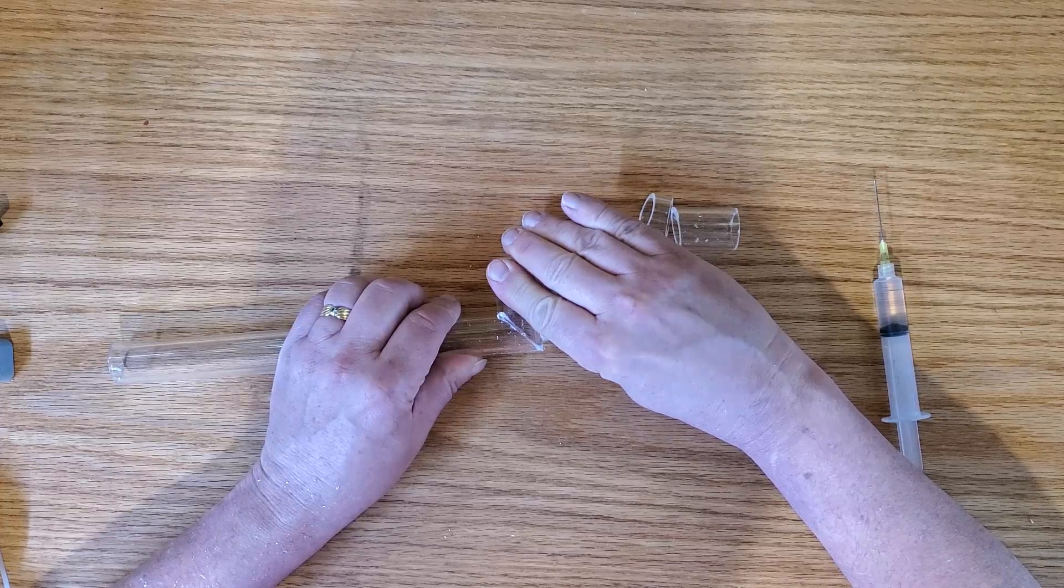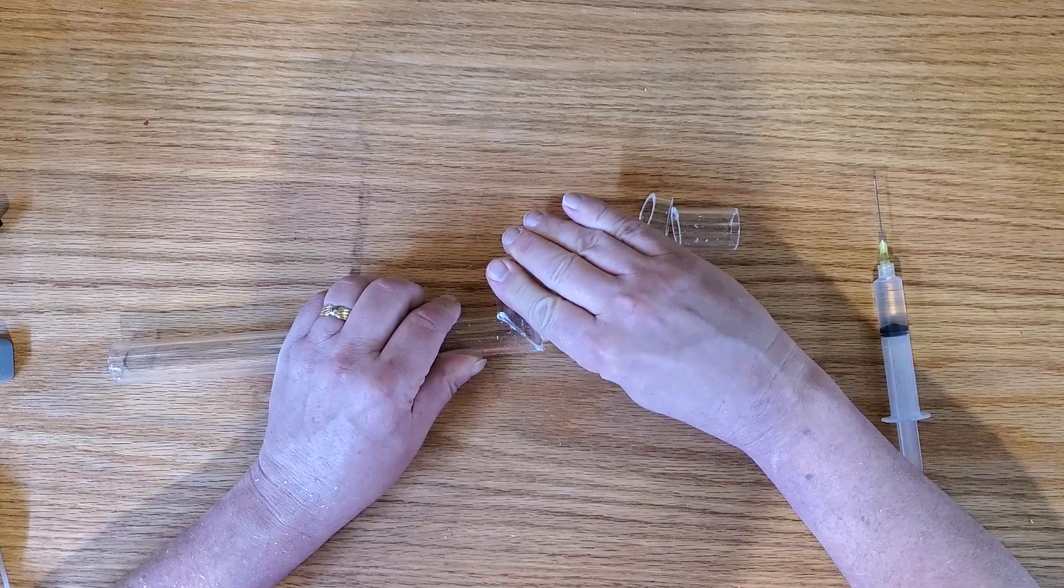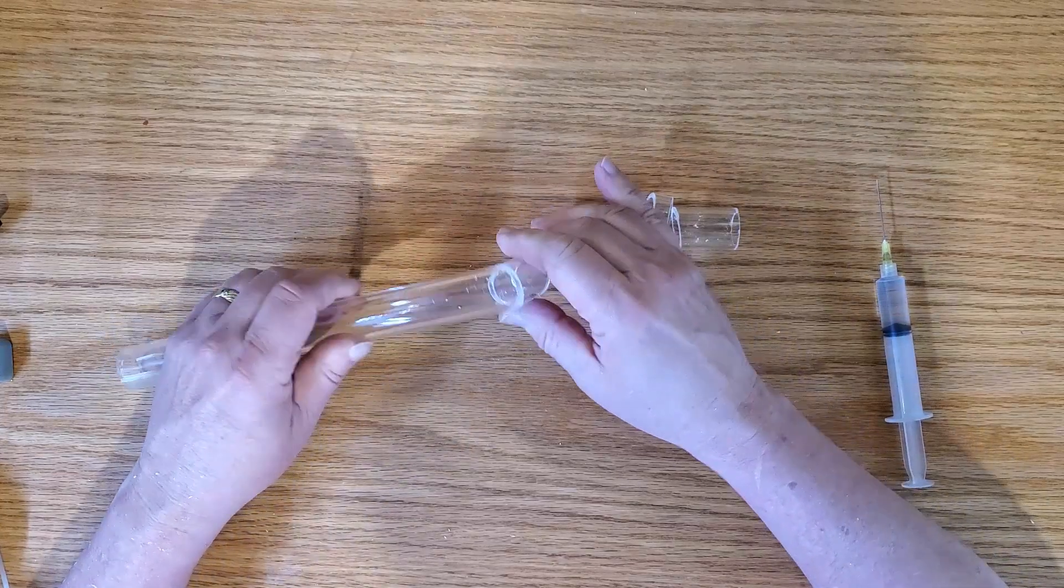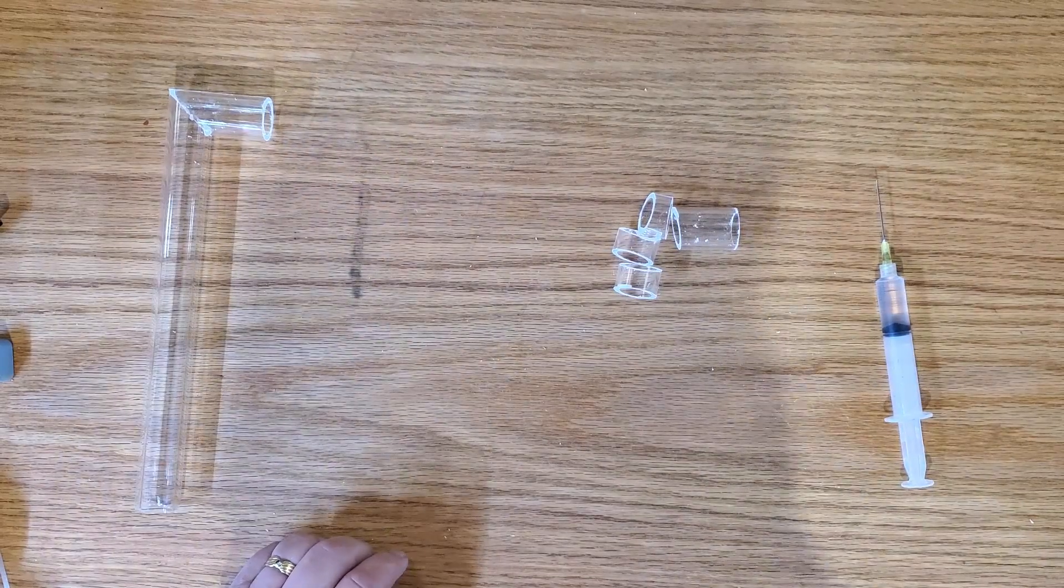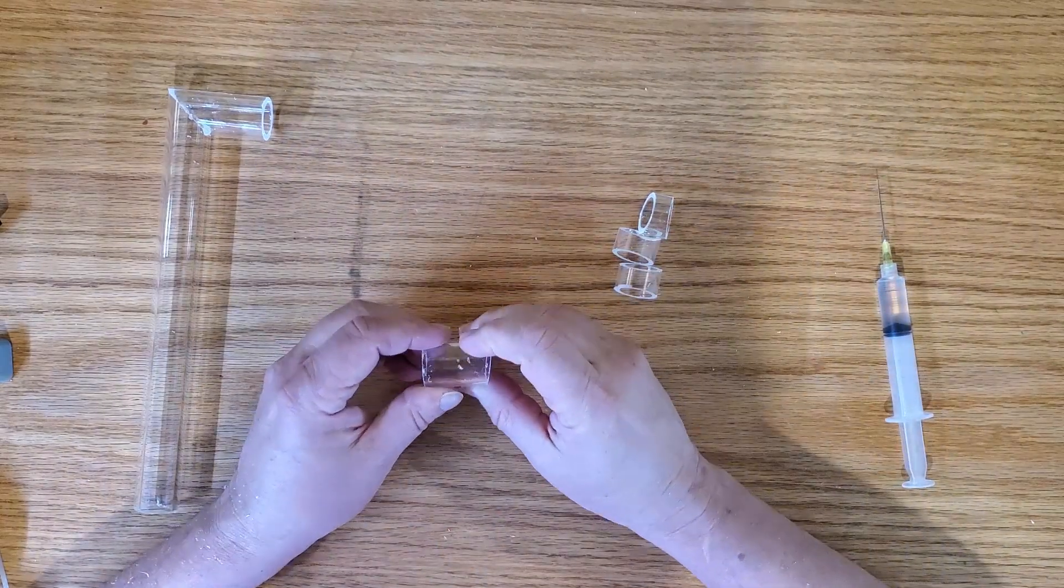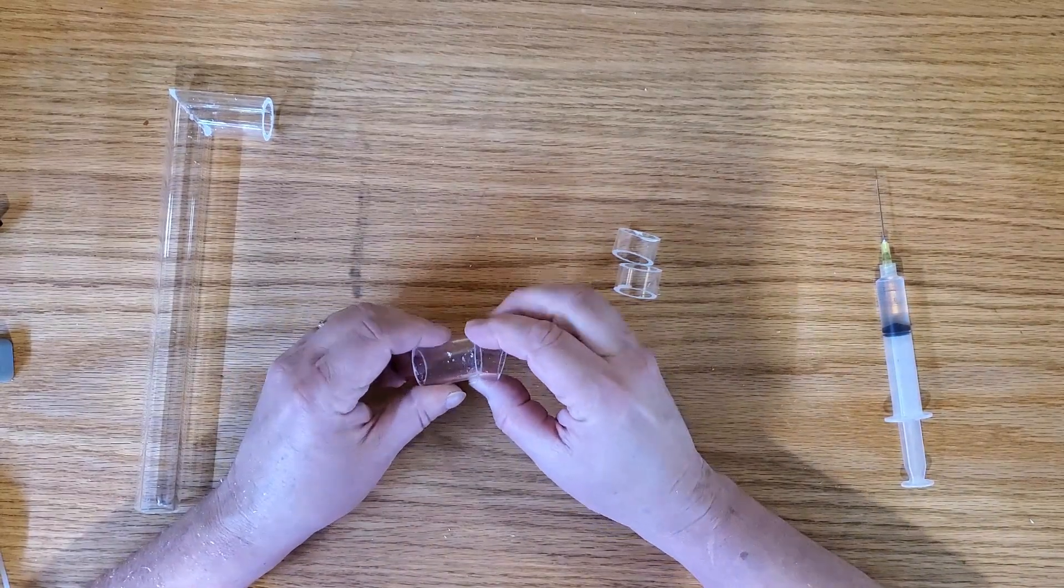Anyone who's done any kind of fluid dynamics knows that any kind of elbow, even a sweeping elbow, you're going to have restricted flow. And of course, the greater the turn that the flow has to take, the momentum, the greater the reduction or back pressure you're going to have.